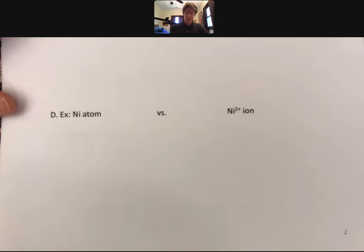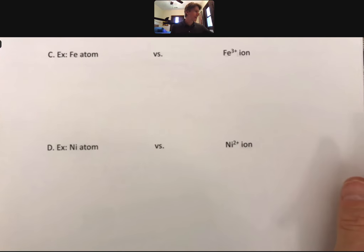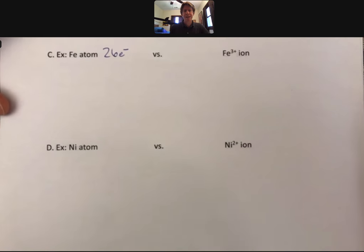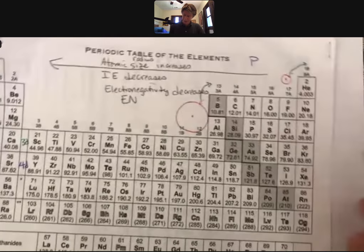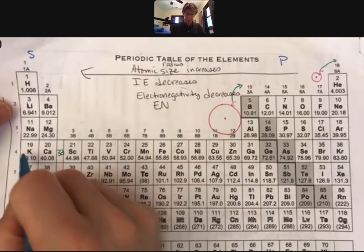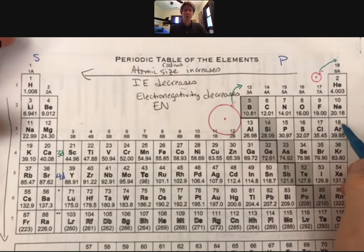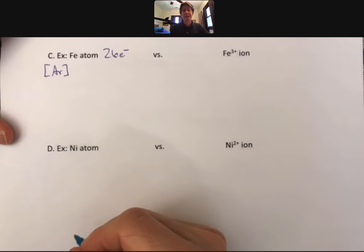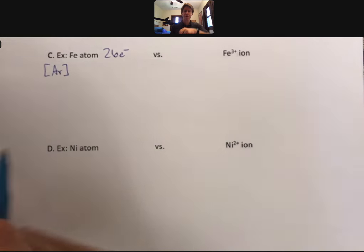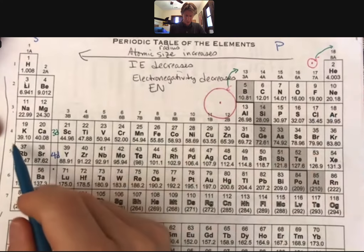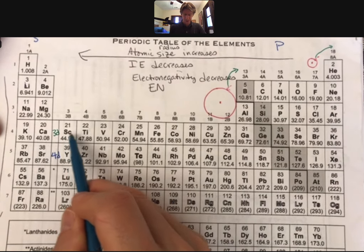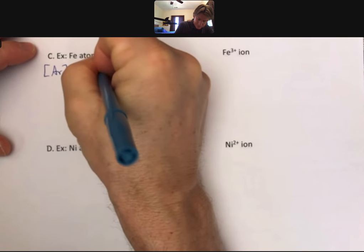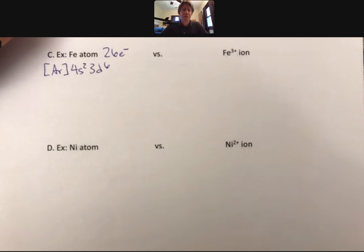This is going to be the iron atom. Iron on the periodic table is element number 26, so it's going to have 26 electrons. This time we're going to do a noble gas core. Here's iron. We're going to go back on the periodic table to argon, so our noble gas core will be argon. That argon is the first 18 electrons, and according to the shape of the periodic table, we go to the 4s2, 3d6.